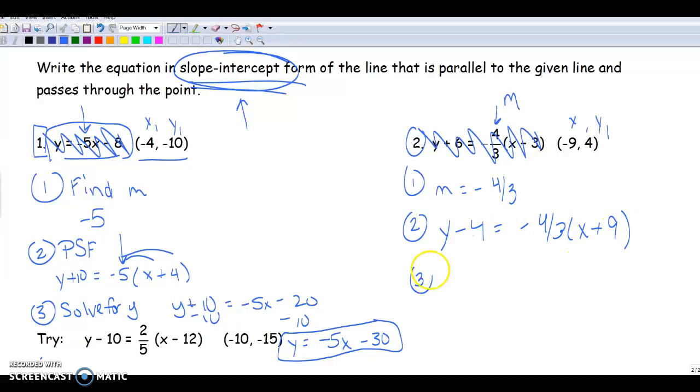That's in point-slope form, and now I'm going to solve for y just like I did in the other one. So I'm going to distribute the negative 4 thirds, and I'm going to get negative 4 thirds x. Leave it as negative 4 thirds, by the way. Don't write it as a decimal. And then I'm going to get negative 12.